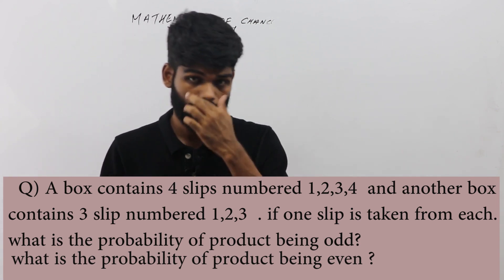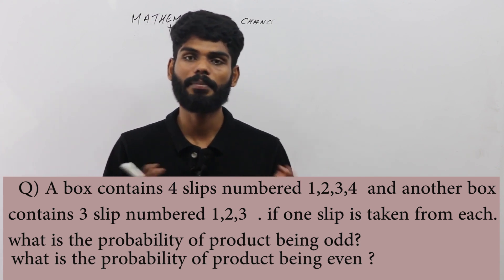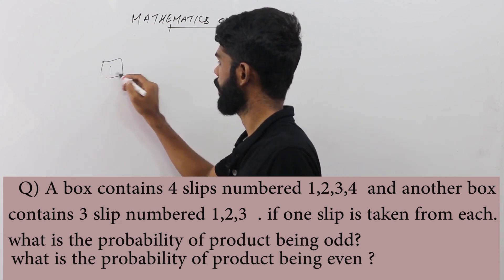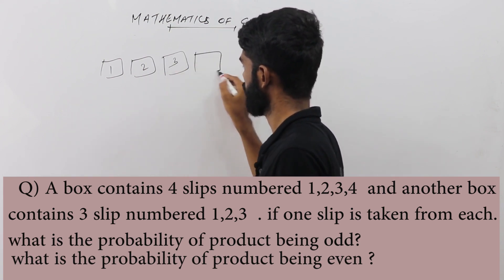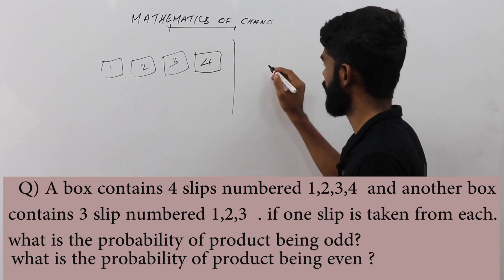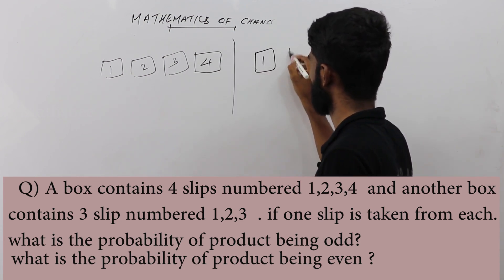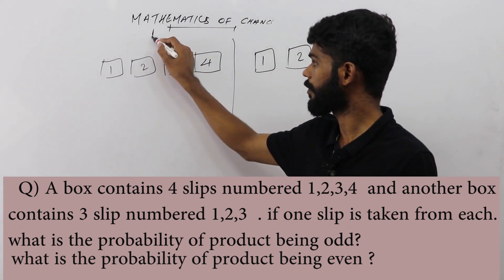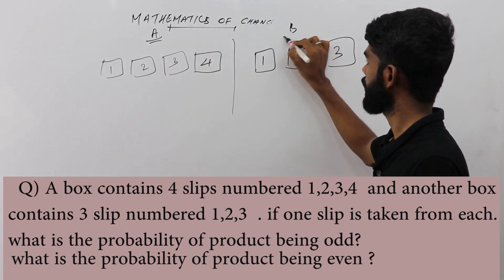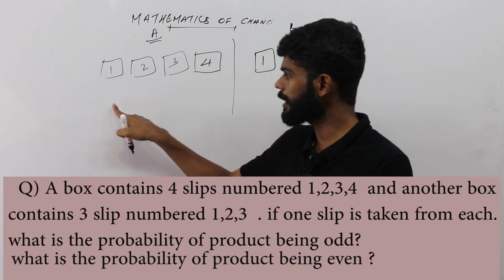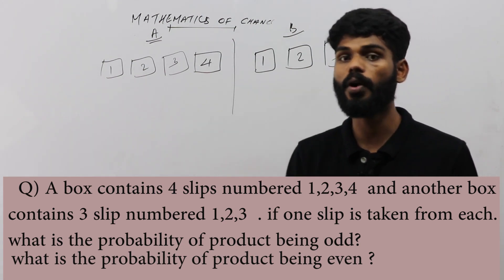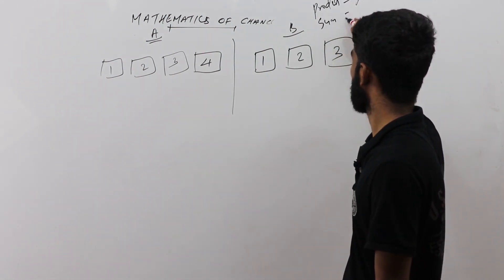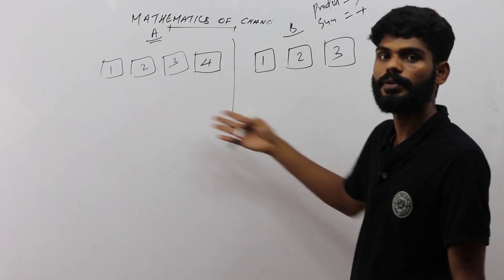This is an interesting question. It's about a product. We set up the cases: box A has slips 1, 2, 3, 4 and box B has slips 1, 2, 3. We list the possible outcomes by taking one slip from each box.